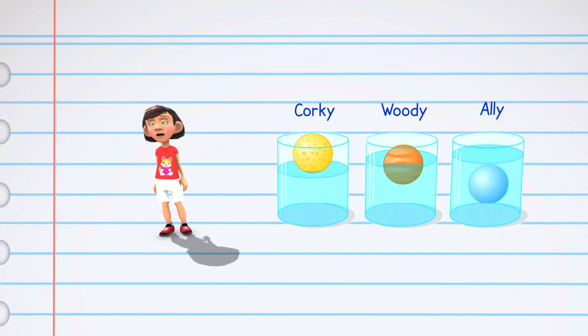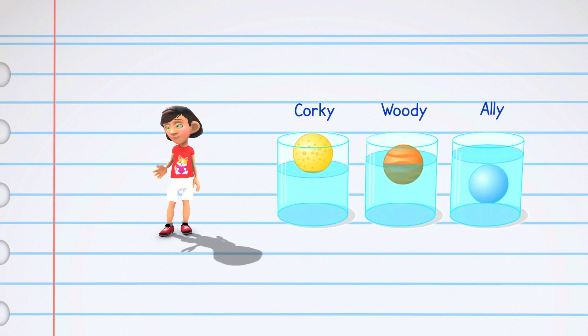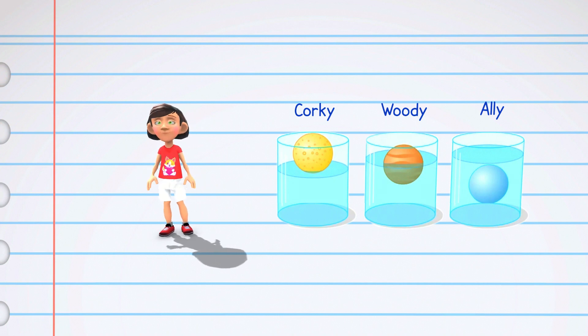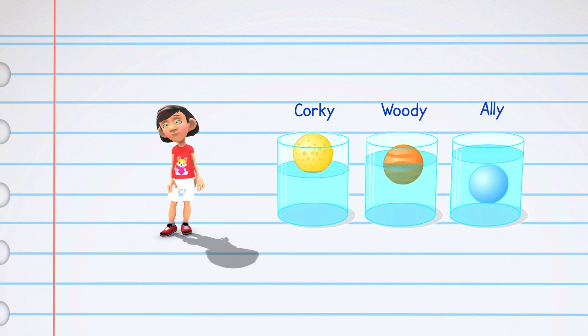Woody the wood is a bit heavier than Corky. When we gently place him in water, he doesn't sink right away. He stays in the middle, kind of like a superhero balancing on water. Wood isn't as light as cork, but it's not too heavy either.